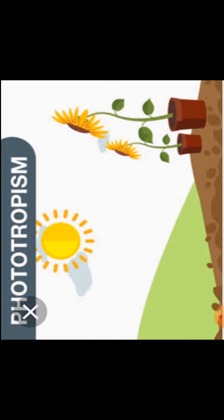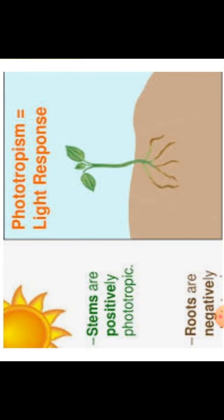Stems show a positive response to light, so we call them positively phototropic. As you can see in the figure, plants are growing towards the sun — so stems are always positively phototropic. Roots, on the other hand, show growth away from the light, so roots are negatively phototropic.